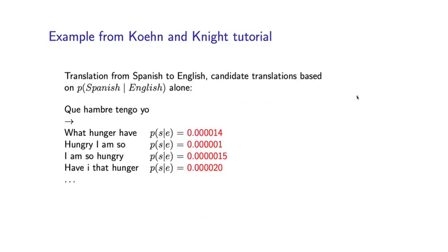So here's an example of the noisy channel approach from a tutorial by Philip Koehn and Kevin Knight. Imagine we're trying to translate in this case from Spanish into English. There are many, many possible translations, many possible English sentences. What we've shown here is a few possibilities. In each case, we've shown the conditional probability of the Spanish given the English under the translation model. So we might get these various terms here. Notice again that we have P(S|E) here. We do not have P(E|S).